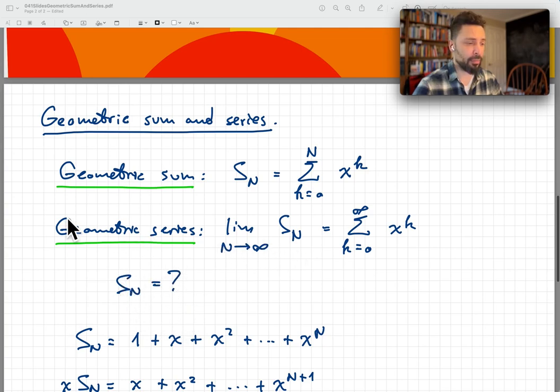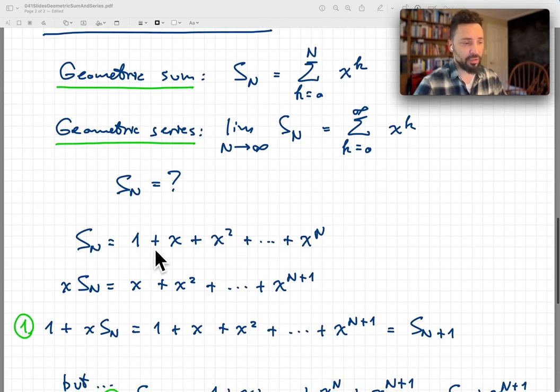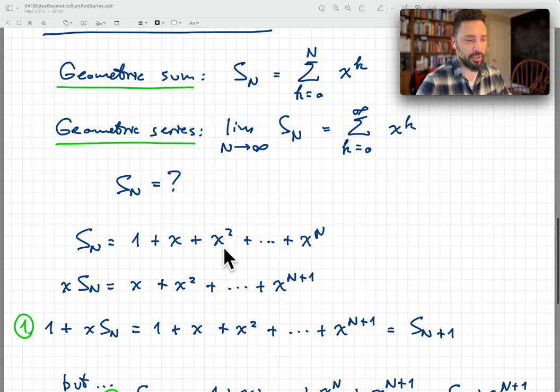So the question is, what is S sub n? Can we figure out what S sub n is? Well, of course, if you just want to write it as a polynomial, then it's just 1 plus x plus x squared and so on up until x to the power n, and that's all there is in principle.